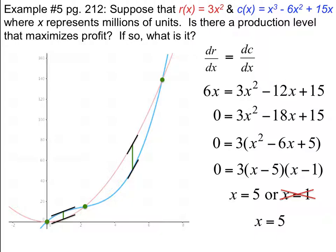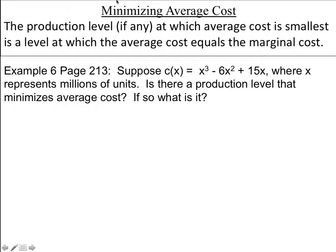The other thing we can do is minimize the cost. The next example asks: is there a production level at which the average cost is the smallest? The answer is that the level is where the average cost equals the marginal cost. The average cost uses algebra, and the marginal cost is the derivative.